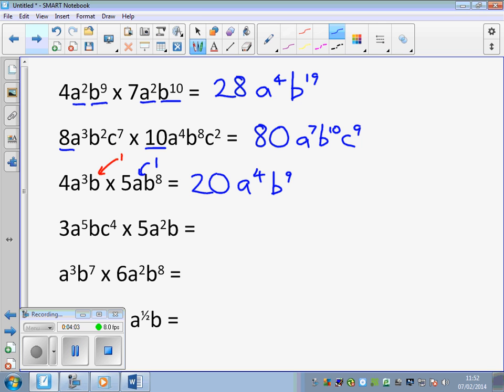The next question is similar. We have coefficients that multiply to give us 15. A to the power of 7. B with no power is a B to the 1. B with no power is a B to the 1, which gives us a B to the power of 2, commonly known as B squared. However, we have a C to the power of 4. There is no C term, so it remains as a C to the power of 4.